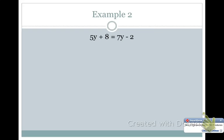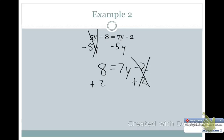All right, example 2. Here we have 5y plus 8 equals 7y minus 2. So we're going to start by moving the 5y. That's smaller than 7y. That causes those to cancel. I bring down my 8 equals 7y minus 2. And I'm going to add 2 to both sides. So those cancel. 8 plus 2 is 10.